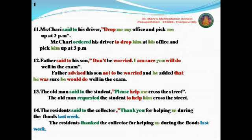Thirteenth sentence: 'The woman said to the student, please help me cross the street.' What type of sentence is it? It is also an imperative. Help me cross the street. How will you find the reported verb? In imperative, if you see the word 'please', you have to write 'requested'. The woman requested the student. Remove the comma and open quotation — for imperative, the conjunction word is 'to'. Write 'help' as it is — the verb should not change. 'Me' will be changed into 'him'. The woman requested the student to help him cross the street.